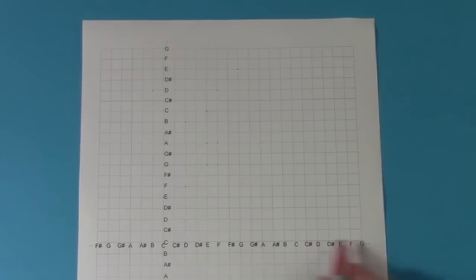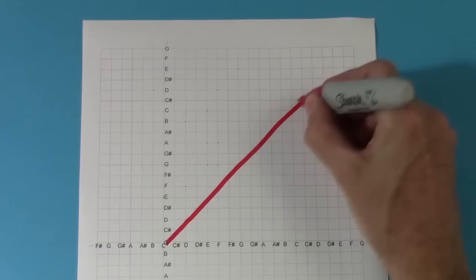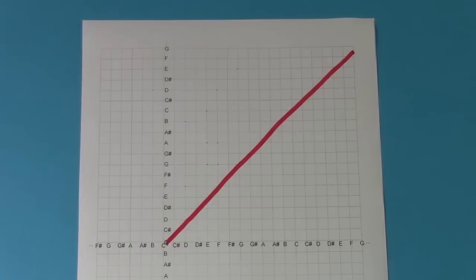The main diagonal, where x equals y, represents unison chords. A diagonal y equals x plus a constant represents two voices a constant distance apart, like these parallel thirds.